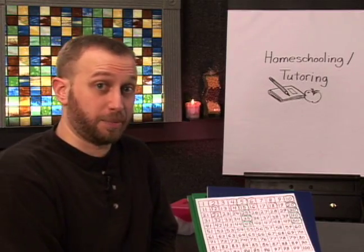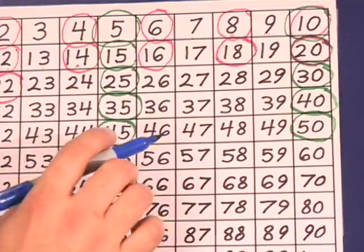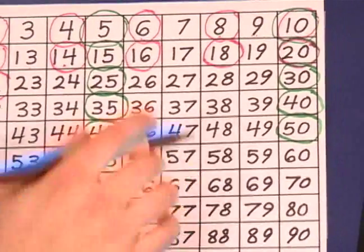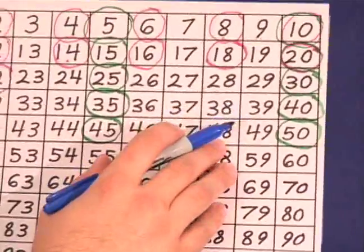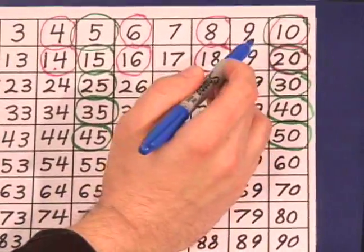Now we're going to talk about skip counting by 10s. Just like the 2s and the 5s, 10s are very easy. You can get a brand new number grid or wipe off your old number grid or get a different color marker.